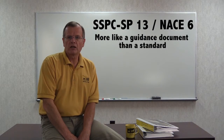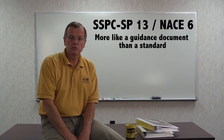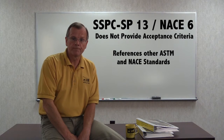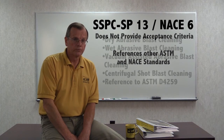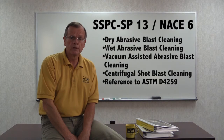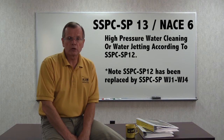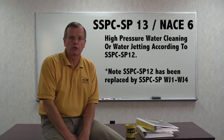SSPC-13/NACE-6 is closer to a guidance document than a standard because it describes methods available for cleaning a variety of concrete surfaces, but it doesn't dictate that a given method should be used, nor does it provide explicit acceptance criteria. It references other ASTM and NACE standards. The methods of preparation include dry abrasive blast cleaning, wet abrasive blast cleaning, vacuum-assisted abrasive blast cleaning, and centrifugal shot blast cleaning, with references to D4259. It also addresses high-pressure water cleaning or water jetting per SP-12. Note that SP-12 has been replaced with SSPC documents WJ-1 through WJ-4.